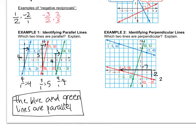So the red line has a slope of two over negative seven. The green line has a rise of seven and a run of two.